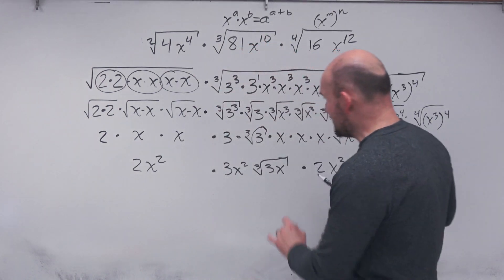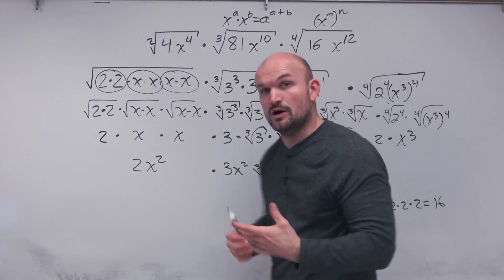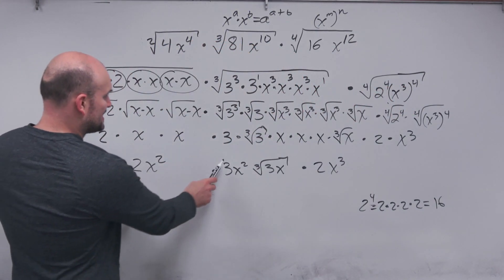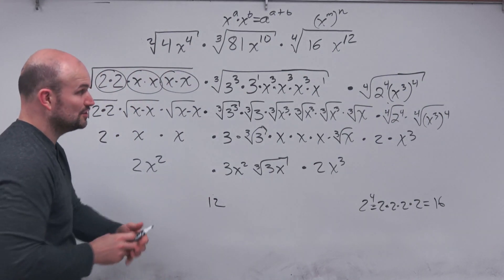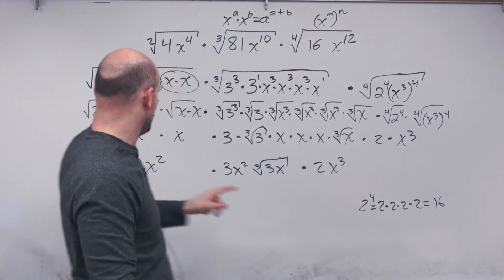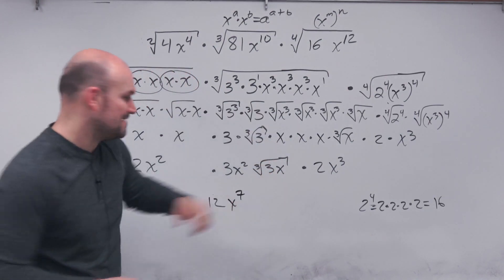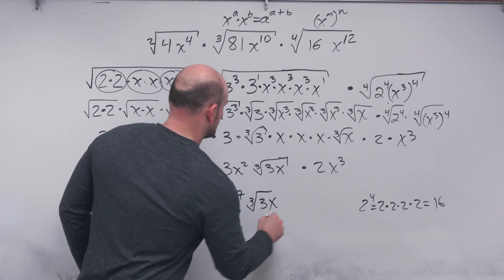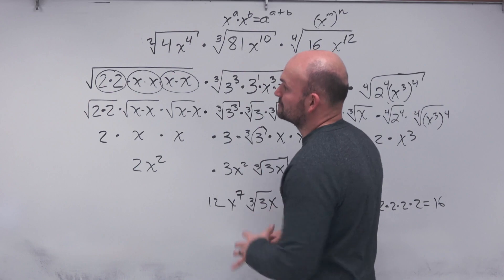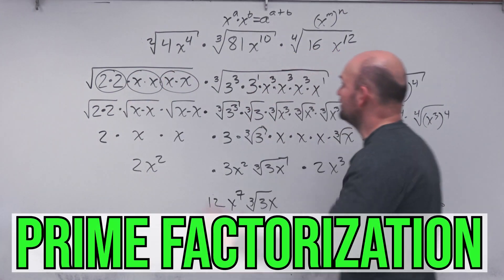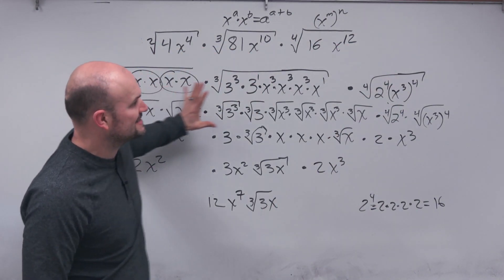The only thing we need to be careful about is: do not multiply terms or expressions outside of a radicand with those inside the radical. Everything else is fair game. So we have 2 times 3 times 2, which gives us 12. Then x squared times x squared times x cubed — using the product rule, you add the powers: 2 plus 4 gives x to the seventh. And on the inside, we have the cube root of 3x, which cannot be simplified further. That is how you simplify a radical expression using prime factorization, the product rule, and the power rule.